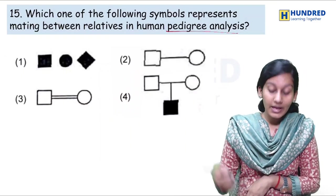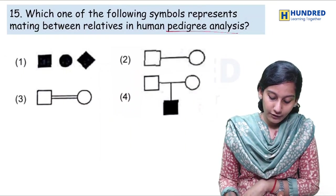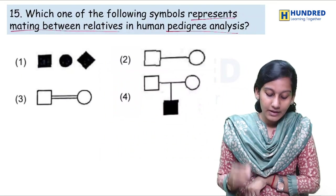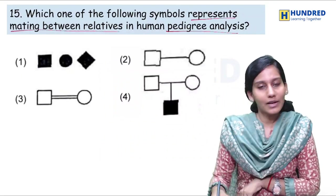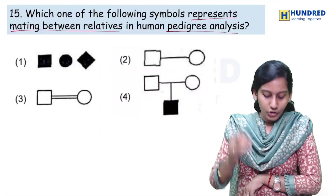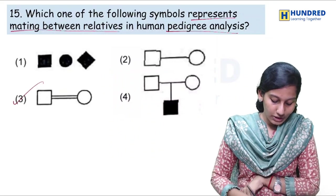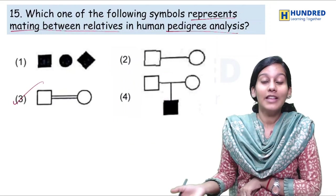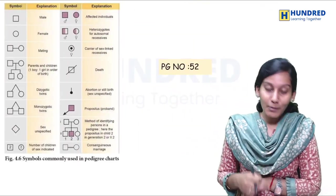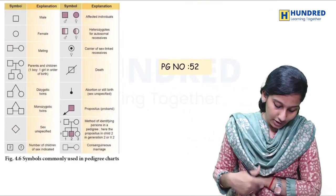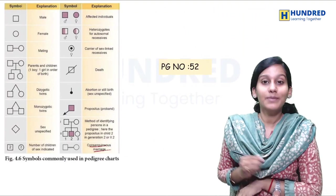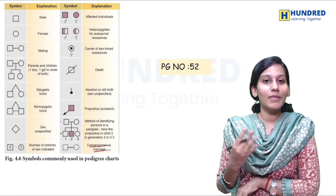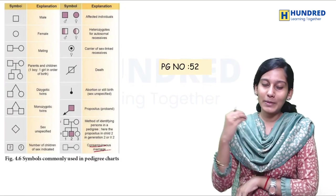Next: this is associated with pedigree analysis. They have given the symbols and we have to identify the symbol which represents mating between relatives — that is, consanguineous marriage. Which symbol is it? Option 3 — mating with a double line means consanguineous marriage, that is marriage between relatives. This is given in the table in our book — a very easy question. If we study the syllabus properly, we can answer this question.